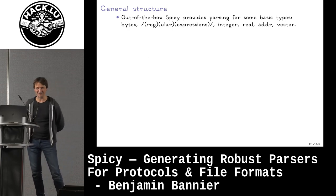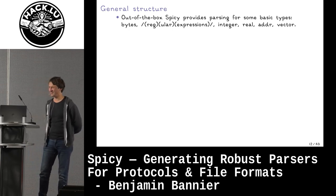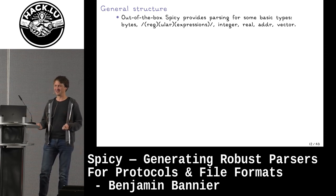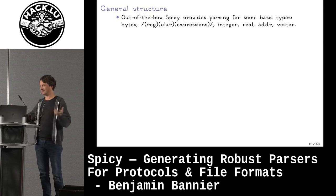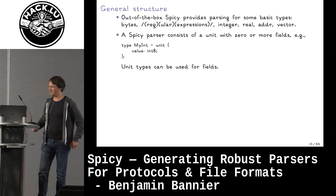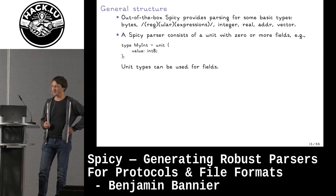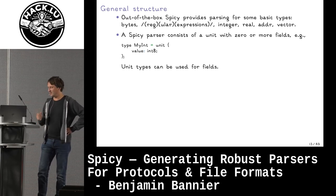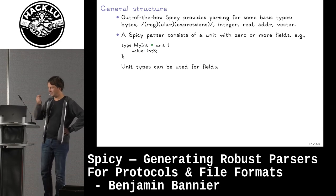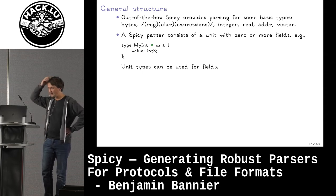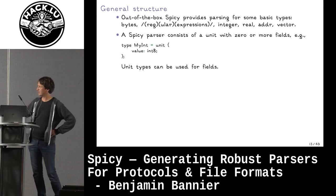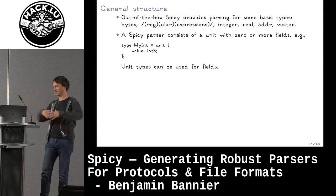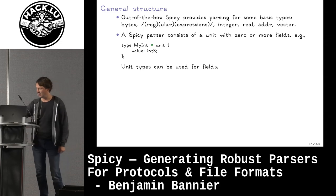The general structure of a SPICY grammar gives you support for parsing basic types: you can parse bytes, match with regular expressions, parse different kinds of integers and floating-point numbers, addresses, and lists of things. From that you build an actual parser, which in SPICY language is called a unit with zero or more fields. This example extracts one byte of data, interprets it in the default byte order as a signed integer, and stores it in a value. You can reuse declared types for other fields, building up bigger and bigger grammars for your domain.